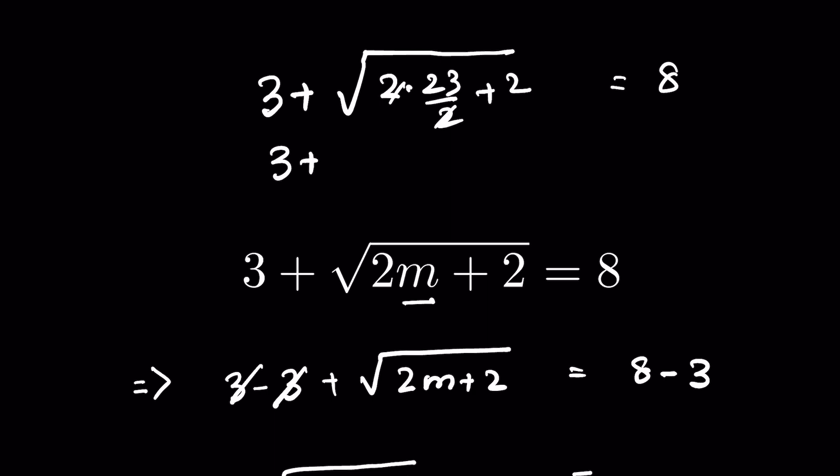3 plus, the 2 and 2 cancel. Square root of 25 equals 8. 3 plus square root of 25 is 5. 5 plus 3 is 8. LHS equals RHS. Answer is verified.